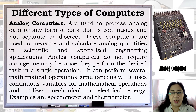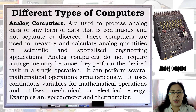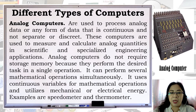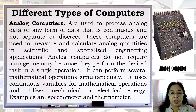Analog computers are used to process analog data — any form of data that is continuous and not separate or discrete. These computers are used to measure and calculate analog quantities in scientific and specialized engineering applications. Analog computers do not require storage memory because they perform the desired task in a single operation. They can perform several mathematical operations simultaneously and use continuous variables, utilizing mechanical or electrical energy. Examples are the speedometer and thermometer.